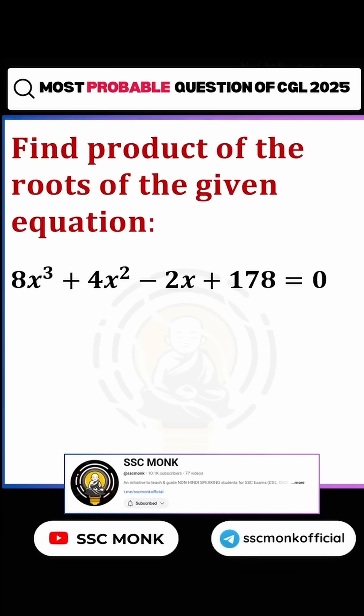Second, find the product of the roots of the given equation. Now, product means what? If p, q, r are the three roots, then p×q×r is equal to -d/a. Here -d = 178 and a = 8.